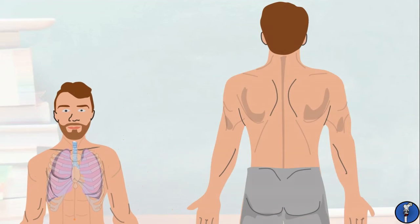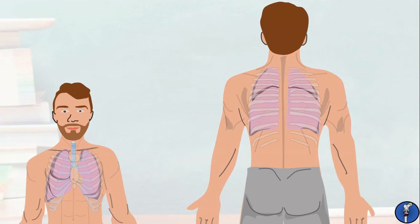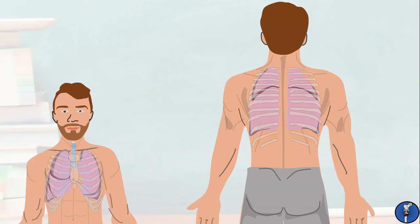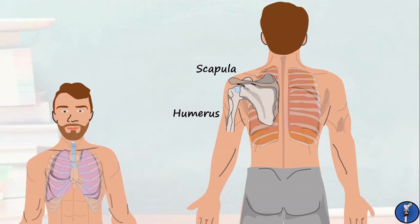Quickly looking at the lungs from the back, we can see the bases lie approximately at the level of the tenth rib, and the fissures start at the fourth rib before travelling downwards. We can also see that the pleura go all the way down to the twelfth rib. The two arm bones associated with the posterior thorax are the scapula, which overlies the ribcage, and the humerus.